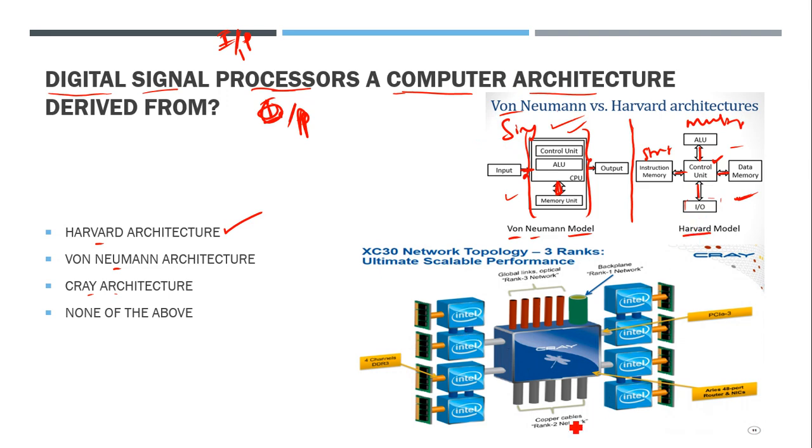Coming to Cray architecture system - Cray is a company. These are supercomputers. Supercomputers use multiple processors, not just one processor. Multiple processors handle input instructions and data memories.